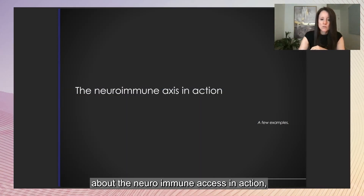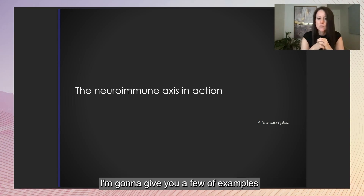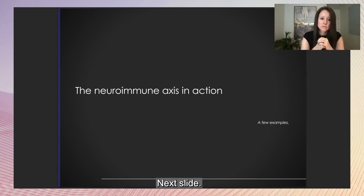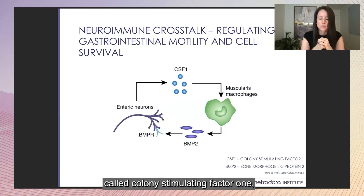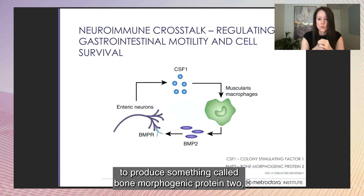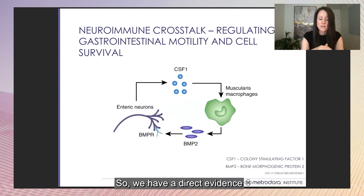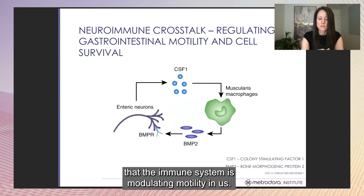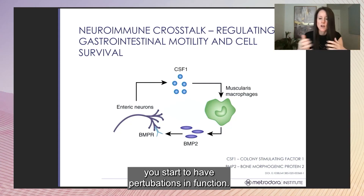Thinking about the neuroimmune axis in action: enteric neurons release colony stimulating factor one, which signals to muscularis macrophages — immune cells living within the tissue. These macrophages produce bone morphogenic protein two, which signals back to enteric neurons and regulates motility. This is direct evidence that the immune system modulates motility. If you have perturbations in either the nervous system or the immune system, you start to have perturbations in function.